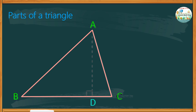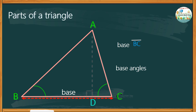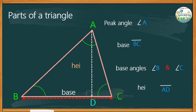Let's try naming the basic parts of a triangle one more time. Study the given picture. For instance, line segment BC is the base. Then our base angles are angle B and angle C. As we said earlier, opposite the base is the peak angle, and in this example, the peak angle is angle A. The distance from A to D is called the height or altitude.